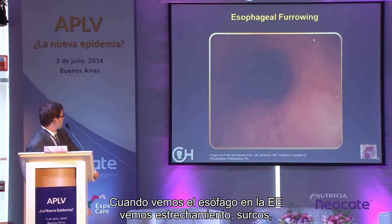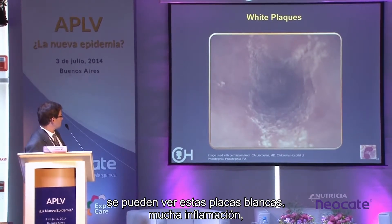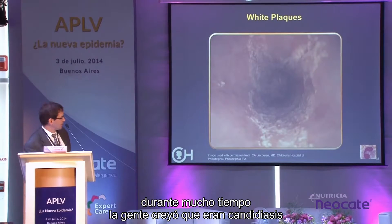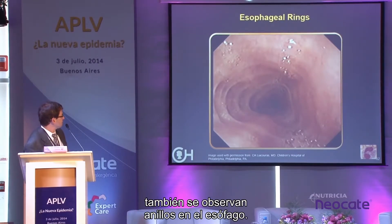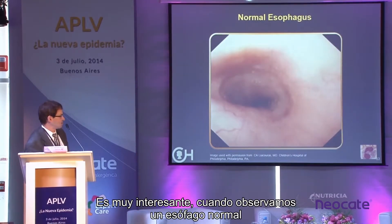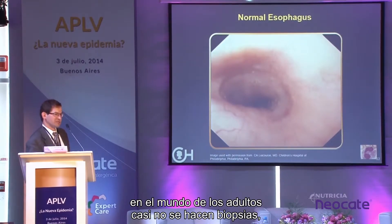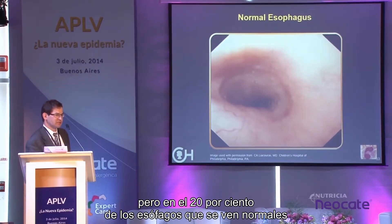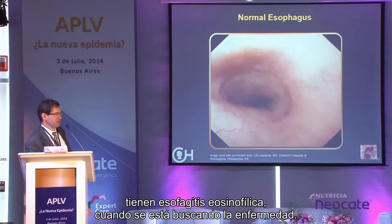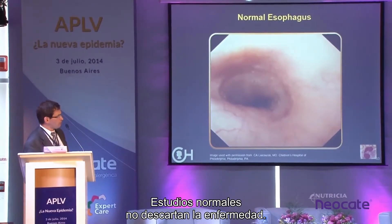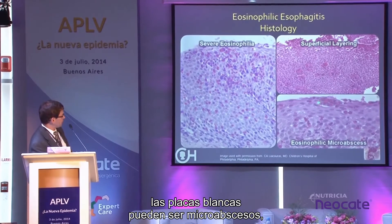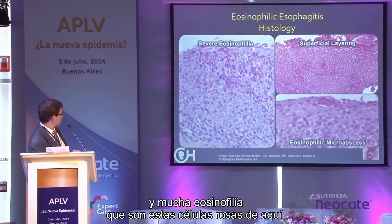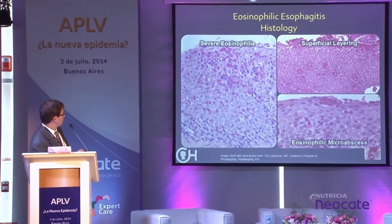Endoscopically in EOE you can see furrowing, narrowing, and white plaques with lots of inflammation — which were mistaken for candidiasis until biopsied and found to be micro-abscesses. You can also see esophageal rings. Importantly, about 20% of normal-looking esophaguses will actually have esophageal eosinophilia on biopsy when you're evaluating for EOE — so a normal endoscopic appearance does not rule out disease.